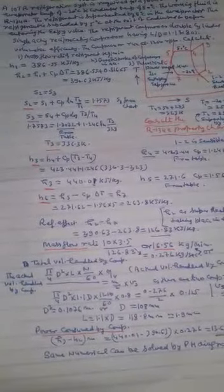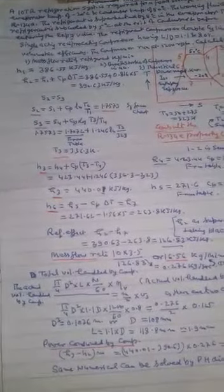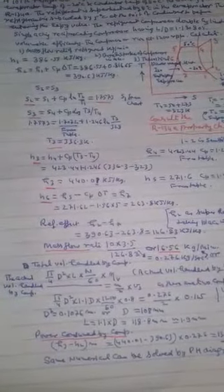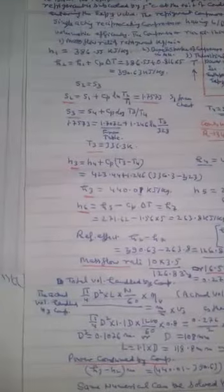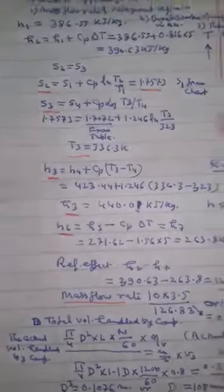Calculate: first, mass flow rate of the refrigerant in kg per minute. Second, bore and stroke of the compressor in mm. Third, theoretical power required in kilowatt.